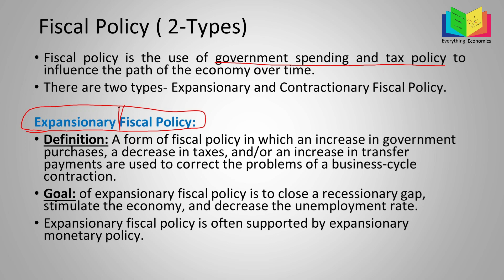Breaking down that definition: first, an increase in government purchases means the government increases its expenditure. Second, a reduction in taxes means the government reduces its tax rate. Third, an increase in transfer payments — transfer payments are payments like subsidies, unemployment benefits, or other benefits that the government gives to people — so the government increases these transfer payments.